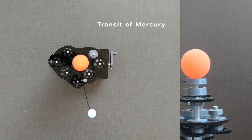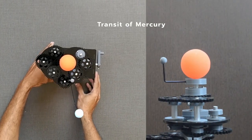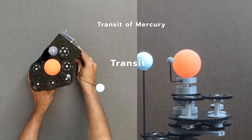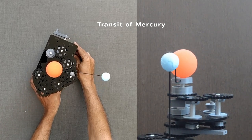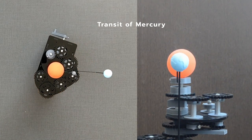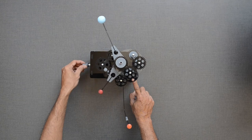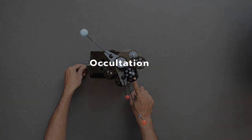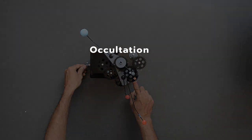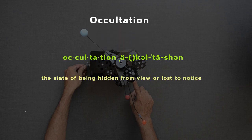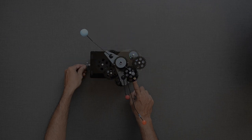Earlier, we explored an important astronomical event: transit. Let us look at another related event, occultation. Its dictionary meaning is the state of being hidden from view or lost to notice.